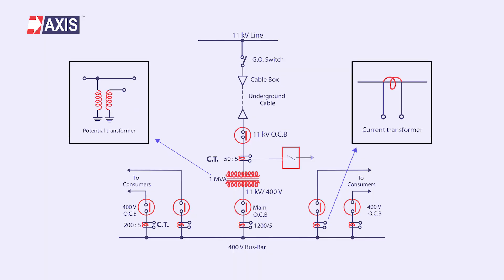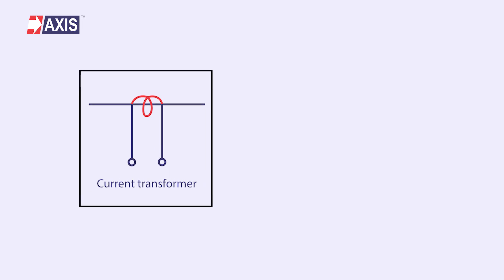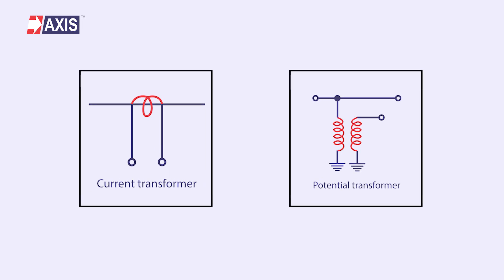Transformers are essential components in power transmission and distribution. They are further divided into two types: the current transformer and the voltage transformer. These transformers are used in stepping up or stepping down the voltage. Power stations most often use a step-up transformer to increase the generated voltage to a higher value. At subsequent substations, a step-down transformer is used to reduce the supply voltage and finally deliver it at the utilization end.